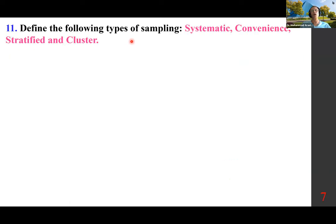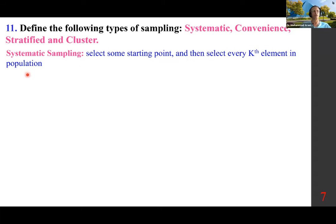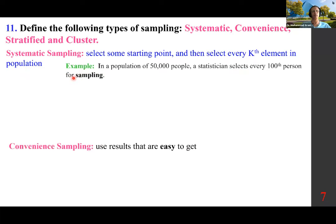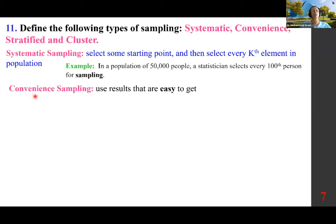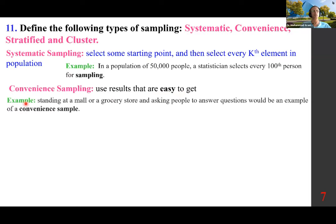We want to define the following types of sampling: systematic, convenience, stratified, and cluster. Systematic sampling: select some starting point and then select every k-th element in the population. Example: in a population of 50,000 people, a statistician selects every hundredth person for sampling. Convenience sampling: use results that are easy to get. Example: standing at a mall or grocery store and asking people to answer questions.